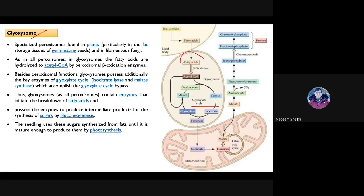Looking at the glyoxylate cycle diagram, a fatty acid passes through this cycle in which succinate, malate, glyoxylate, isocitrate, and citrate are present as metabolites — most of which are also present in the citric acid cycle.